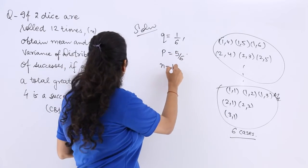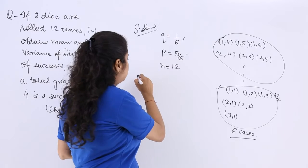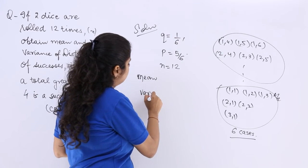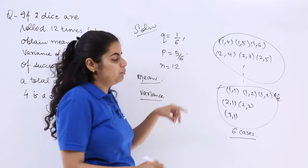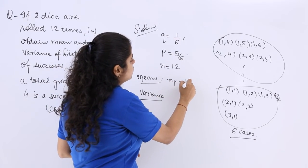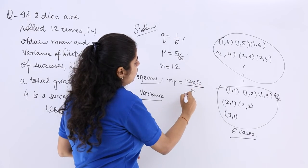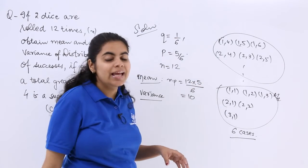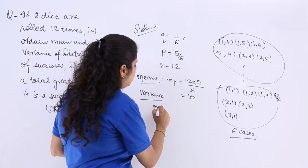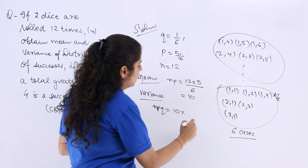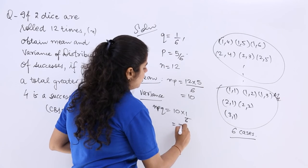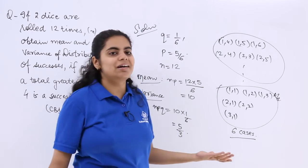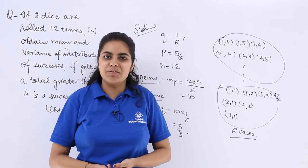N is the number of trials which is 12. So what is the mean? Simply the mean and the variance for this question have the answers as mean is NP which is 12 into 5 by 6 which is nothing but 10, and what is the variance which is NPQ? So NP is already done. Let's simply multiply by Q, so this becomes 5 by 3. So these are the two answers which are respectively 10 and 5 by 3.